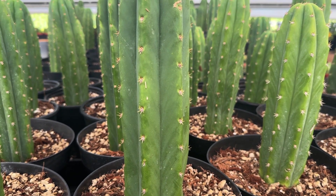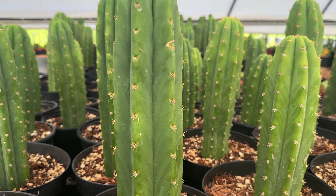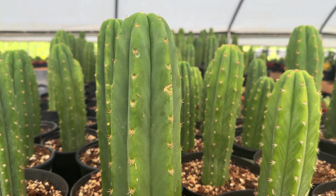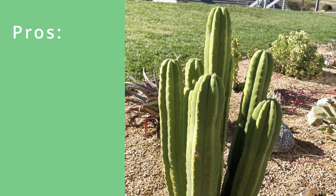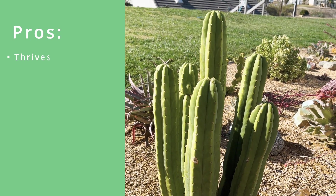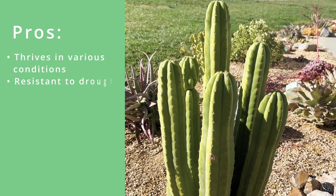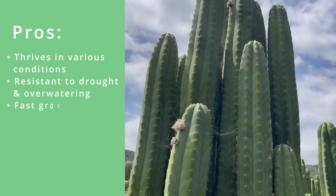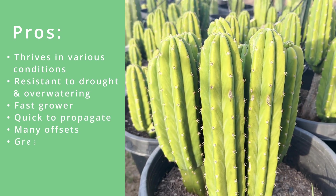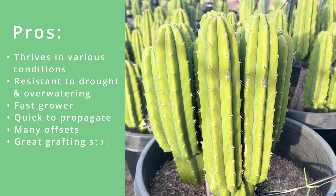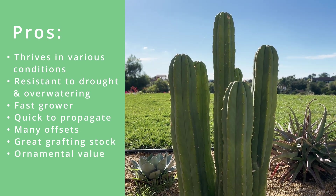So why do people want the PC San Pedro so much? Why has it become the predominant cultivar? People really love PC San Pedro because it thrives in various conditions, is resistant to drought and overwatering, is a fast grower and quick to propagate, it forms a lot of offsets, it makes great grafting stock, and it has value as an ornamental plant in landscapes.